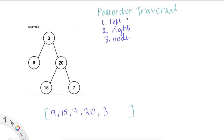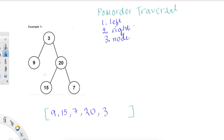Today we're looking at the problem post-order traversal of a binary tree. I just wrote out what the order of that traversal is. For this traversal, we need to consider the left node first and then the right node, and then finally the node that we're on. Let's take an example here and see how we're getting the result of a post-order traversal from a tree like this.